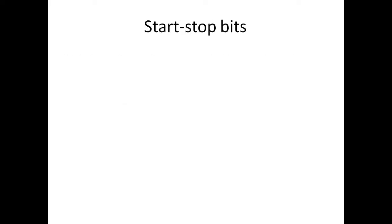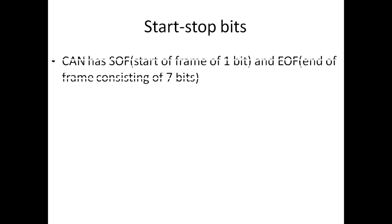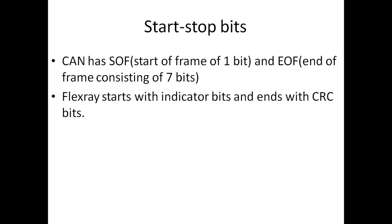What about the start-stop bits? CAN uses a start-of-frame and it has got an end-of-frame which consists of 7 recessive bits. FlexRay starts with, there is no start-stop bits in FlexRay but it has got indicator bits when it starts the frame.